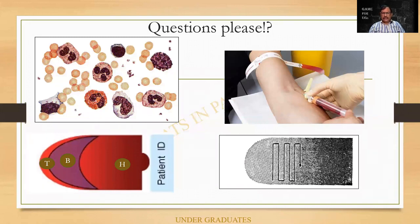Now look at this slide — a series of pictures rather. What are the questions that can be asked? We'll start with this. What are the modes of collection? You can have venous blood, arterial blood, or capillary blood.